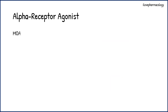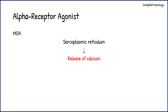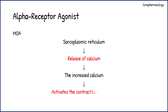Coming to the mechanism of action: once the alpha receptor agonist is administered, it acts on the sarcoplasmic reticulum, causing release of calcium. The subsequent release of calcium leads to increased calcium levels, and this increased calcium activates the contractile mechanism in the respective muscles.